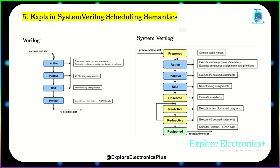Explain SystemVerilog scheduling semantics. In Verilog, we have active, inactive, NBA, and monitor regions. In SystemVerilog, in addition to these active regions, we have reactive regions also. Starting with the prepone region, then active, inactive, NBA — same as Verilog — and then come the reactive regions: observe reactive, then re-inactive, and then postpone regions.